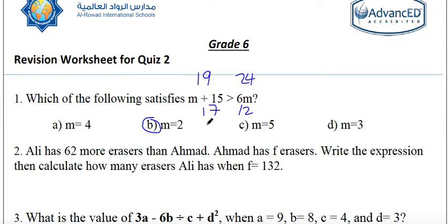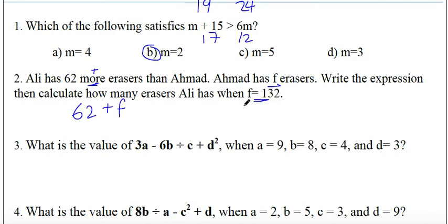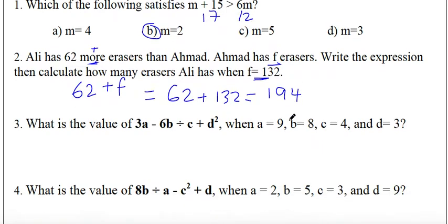The right choice is m equals 2. For question two: Ali has 62 more erasers than Ahmed. Ahmed has f erasers. Write the expression, then calculate how many erasers Ali has when f equals 132. The word 'more' means plus. Ahmed has f erasers and Ali has 62 more, so the expression is 62 plus f. When f equals 132, it will be 62 plus 132 equals 194.